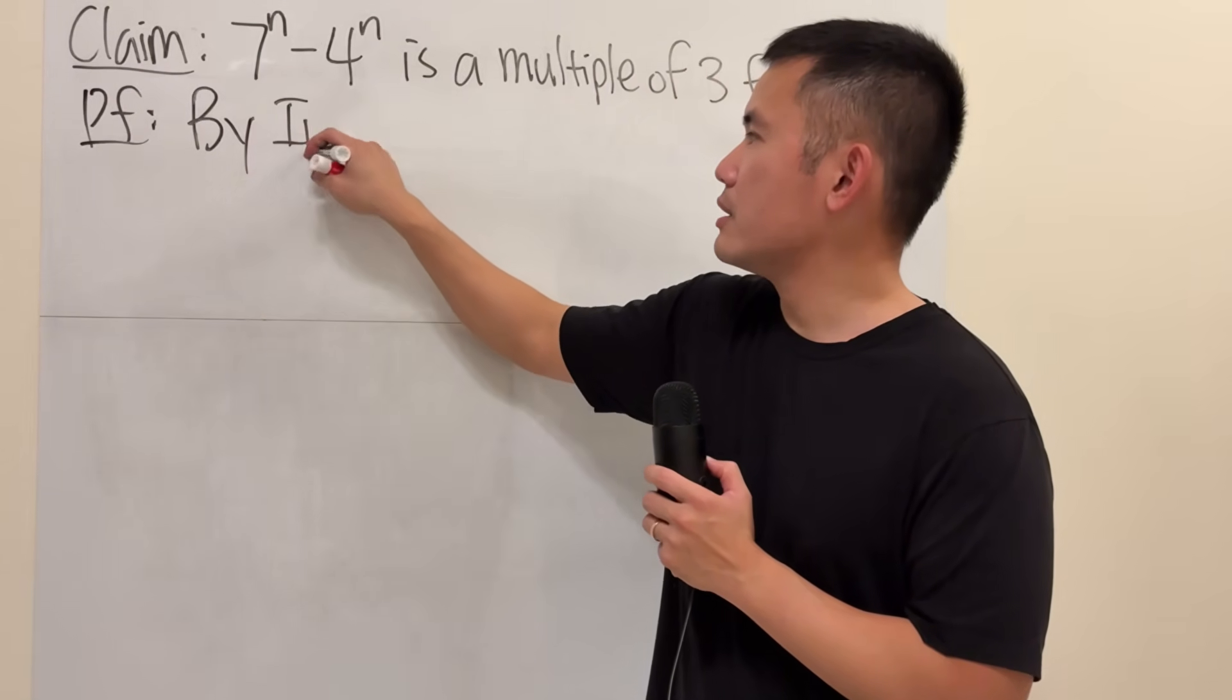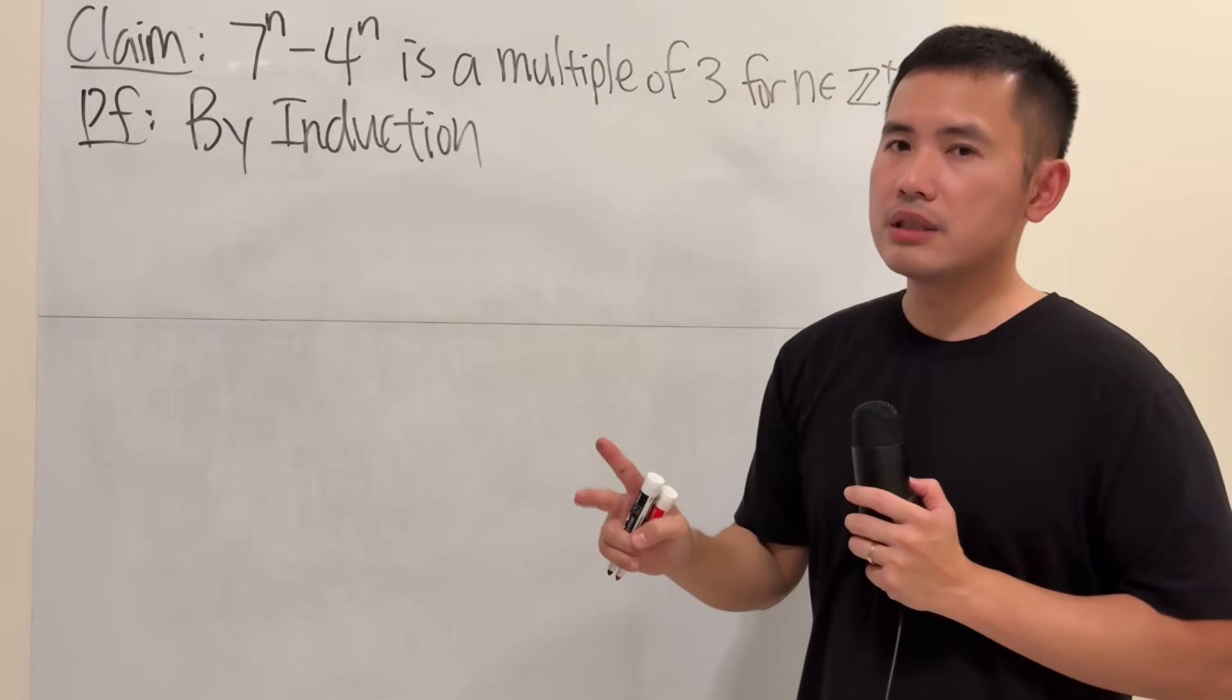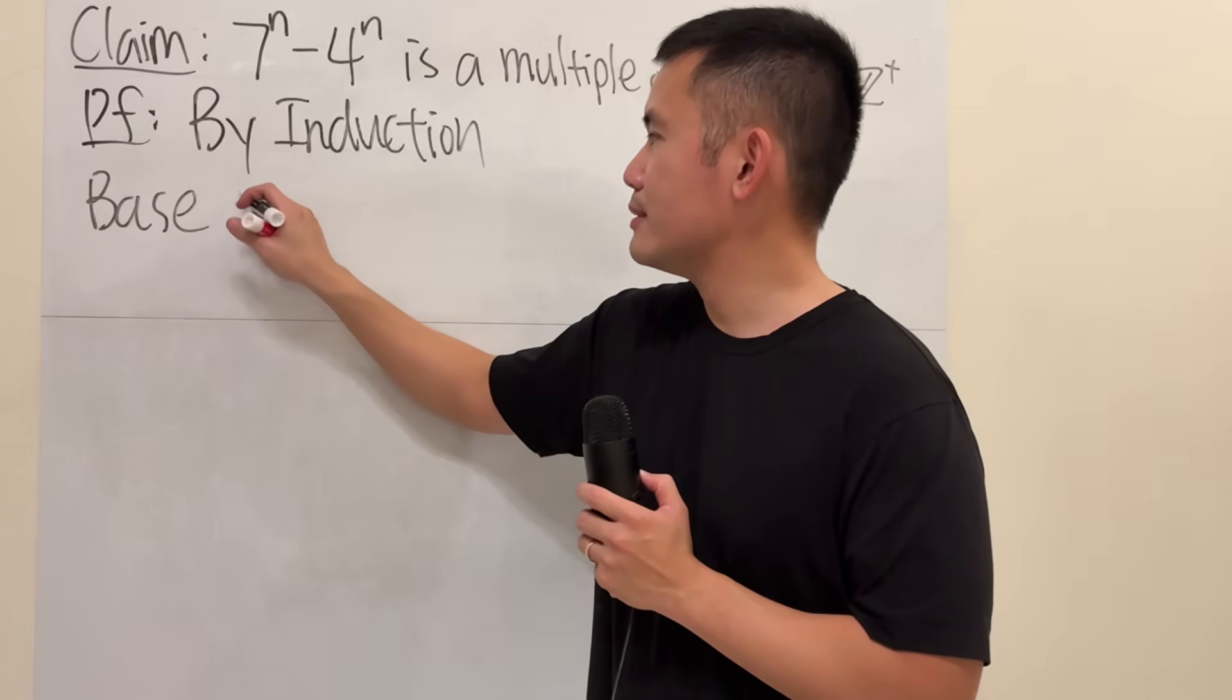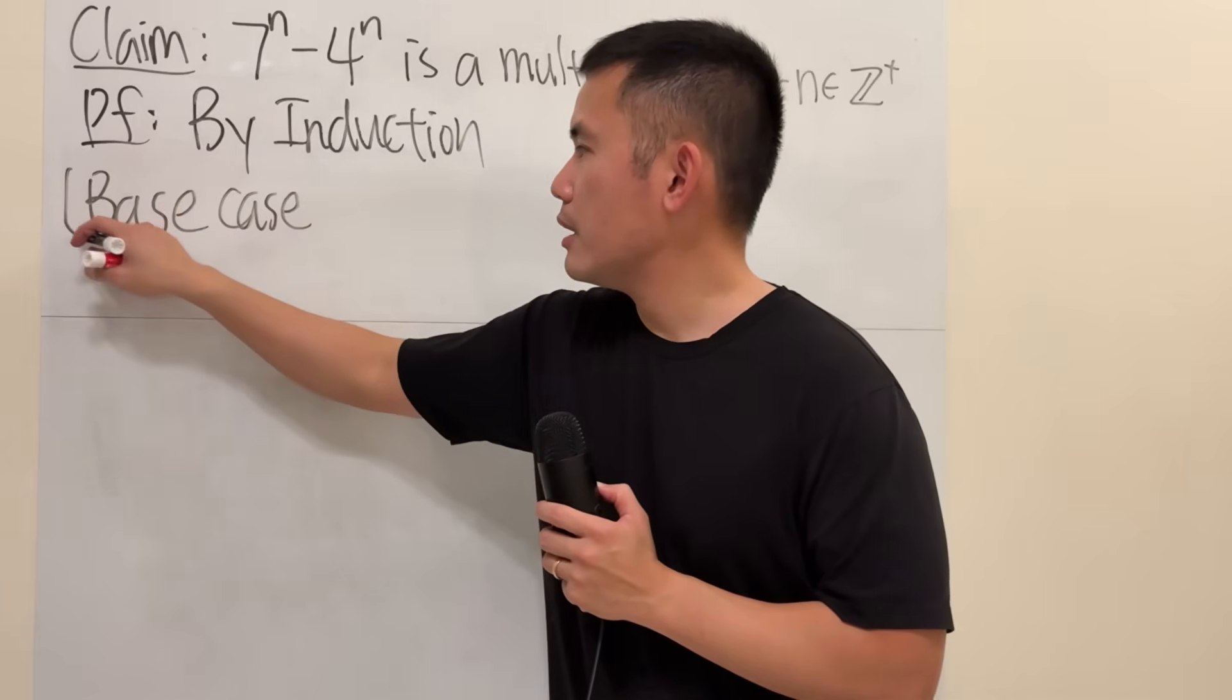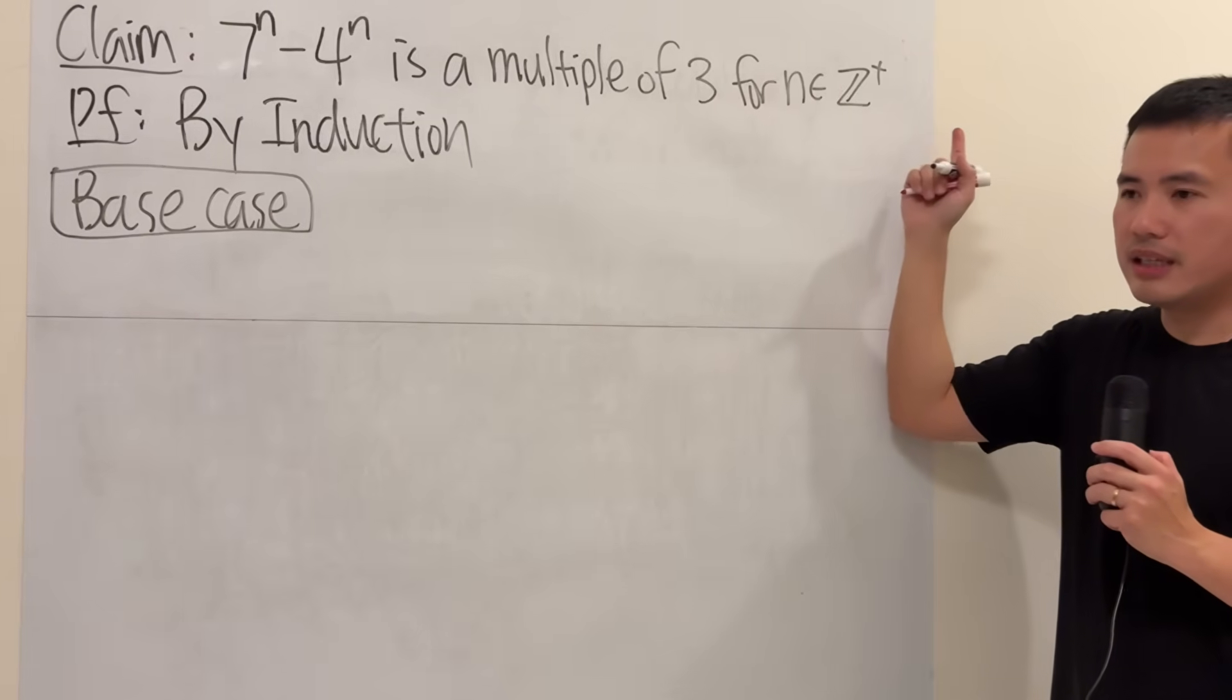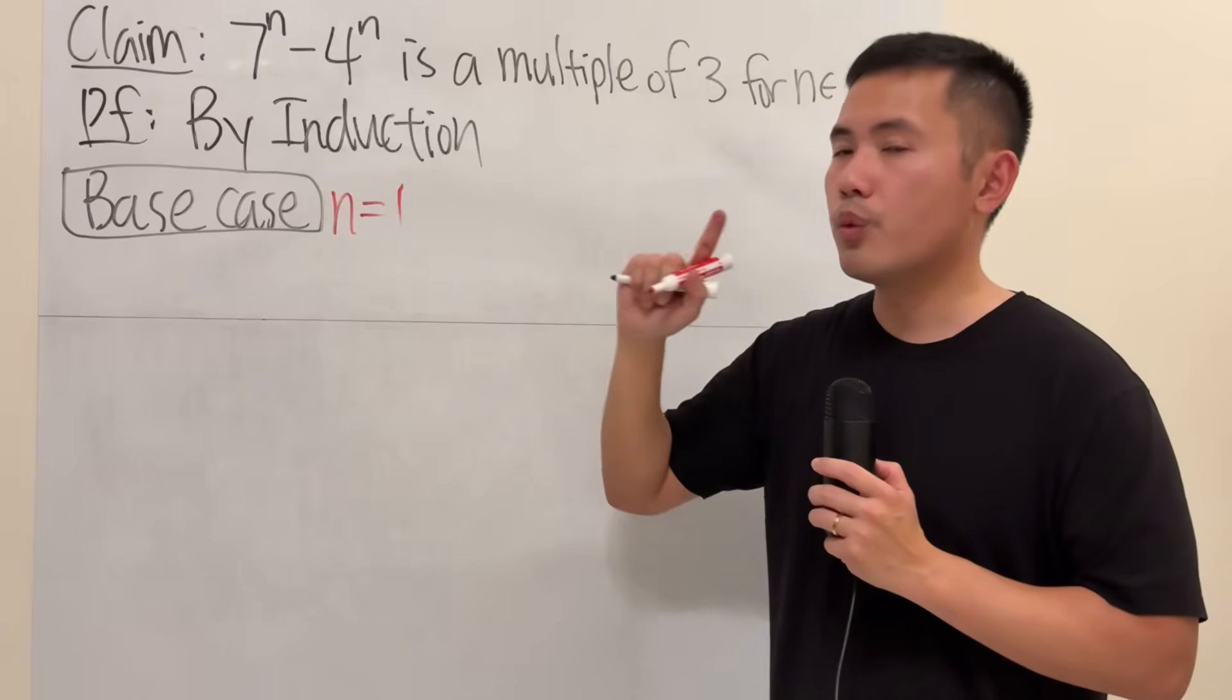By induction. And there are two parts. The first part is the base case, the happy case. Right here, because n is an element of the set of positive integers, I'm going to start off with n equals 1.